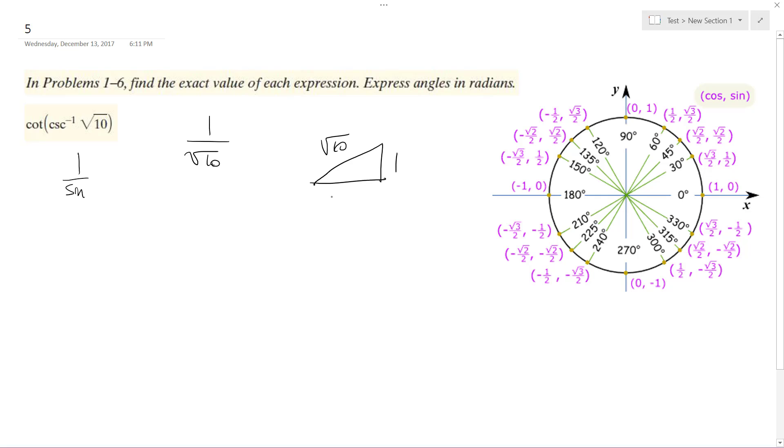This is going to be root 10, and this is going to be 3, because it's the square root of square root of 10 squared, which ends up being 10 minus 1 squared, which is just 1, equals square root of 9, which is equal to 3.